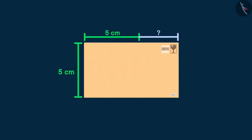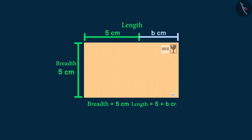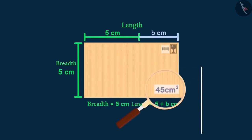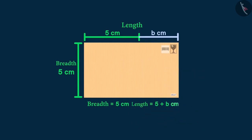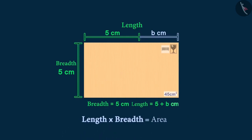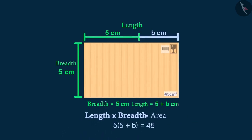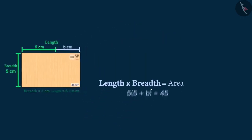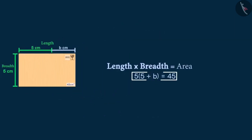Let's help him. We know that the breadth of the parcel is 5 cm and the length is longer than 5 cm. So, we can write the parcel's length as (5 + b) cm. We also know that the area of the parcel is equal to 45 cm². We know that the area of the rectangle is length times its breadth. So, we can form an equation with its area. Here, we will have to solve this equation to get the value of the variable b. This is how we can expand our equation.